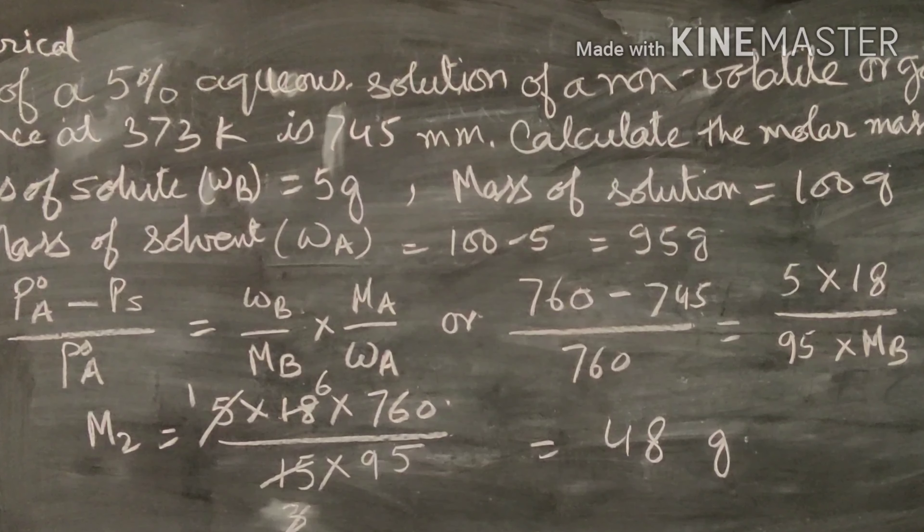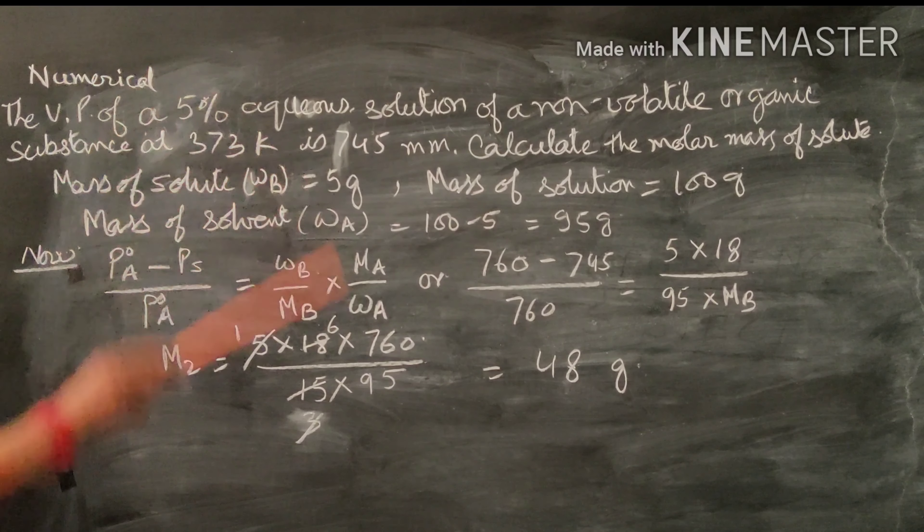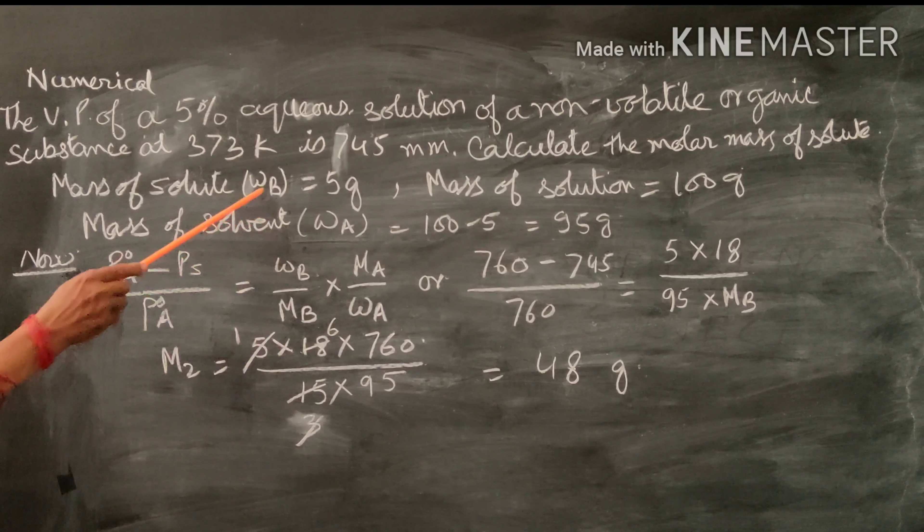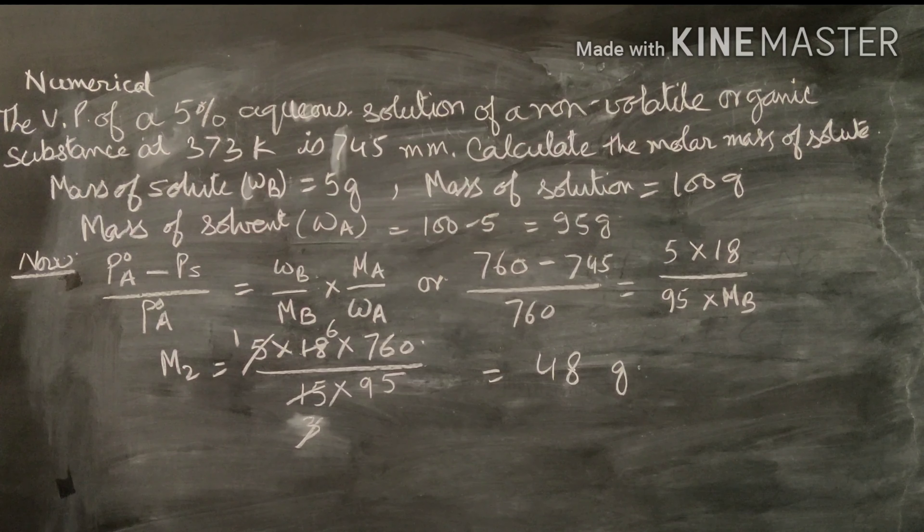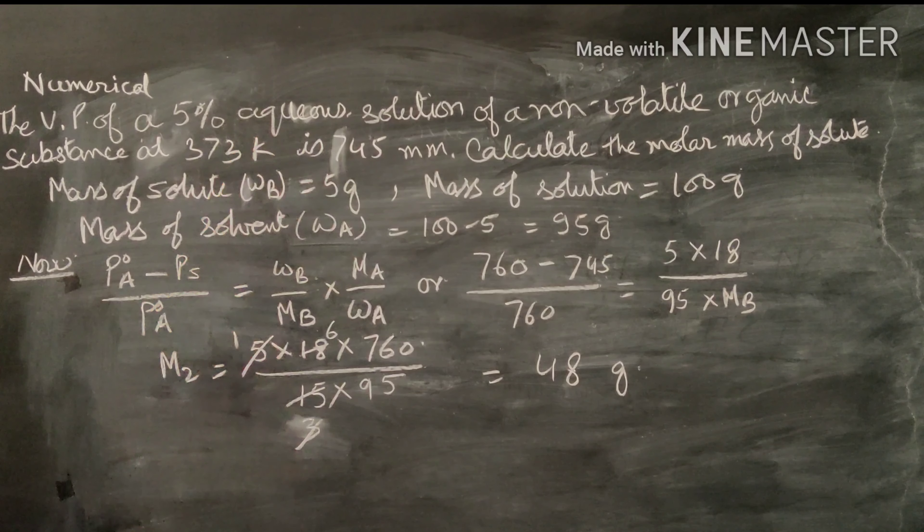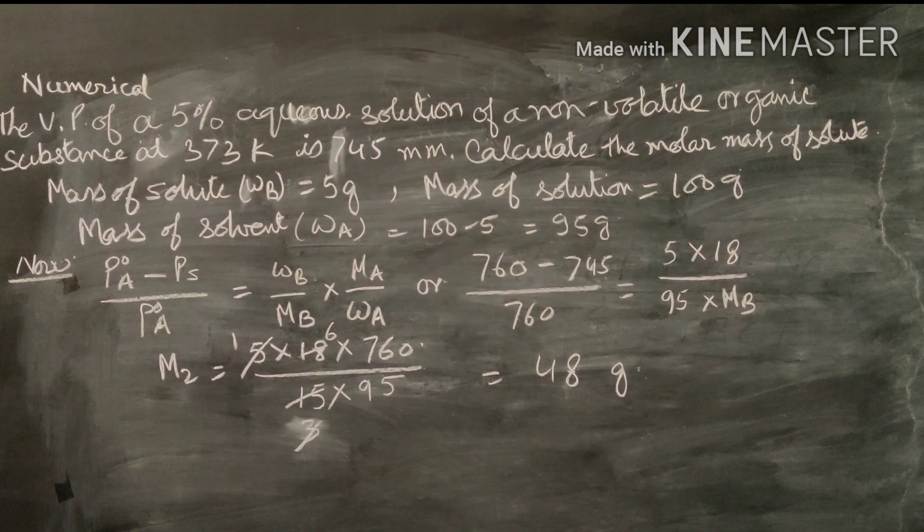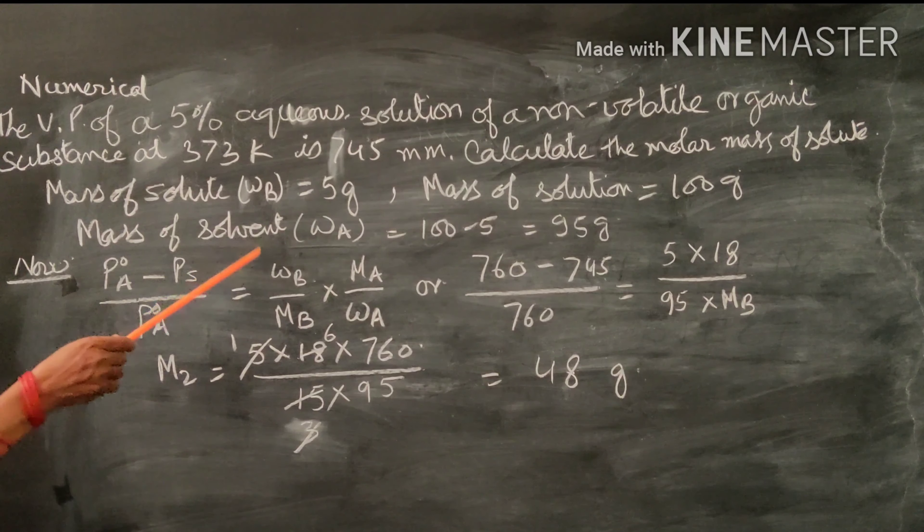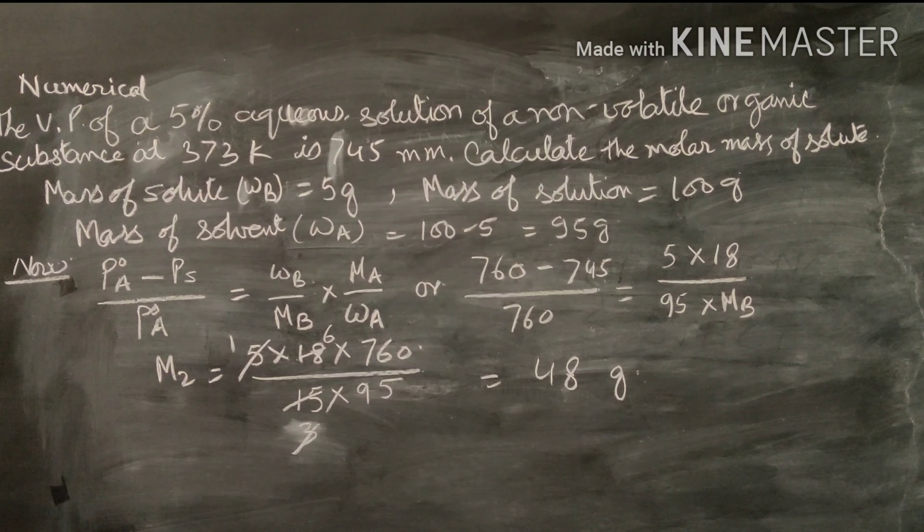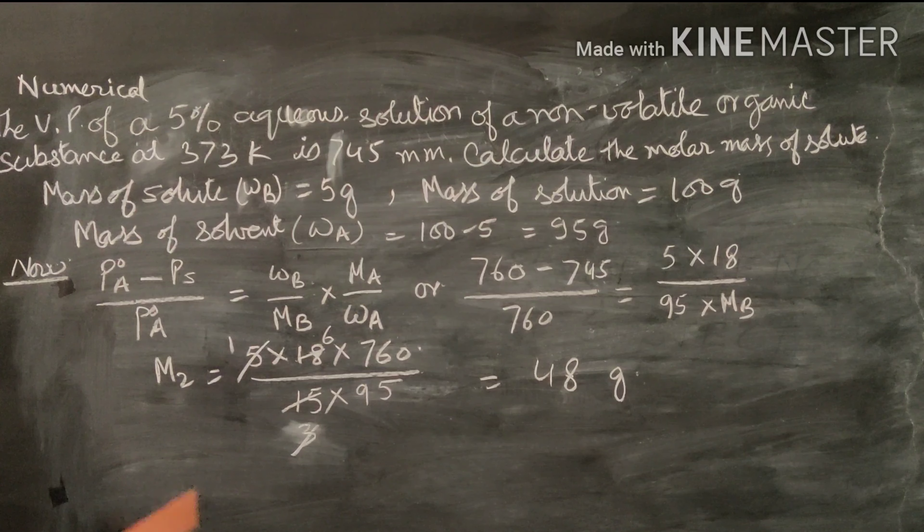To recap: for a 5% solution, the mass of solute is 5 grams, the mass of solution is 100 grams, and the mass of solvent is 100 minus 5, which equals 95 grams.